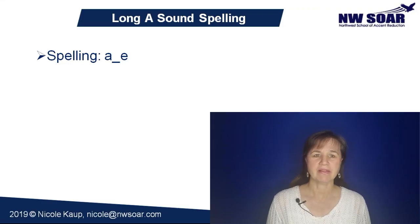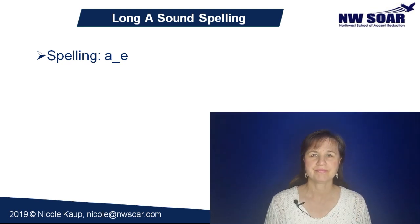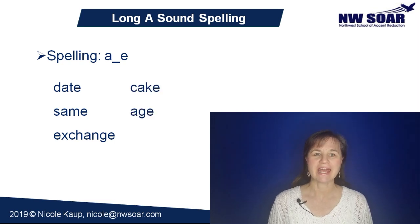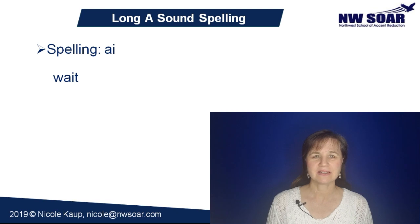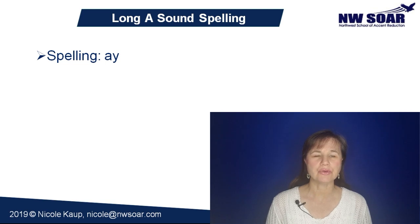Like all English long vowel sounds, there is more than one common spelling for this sound. In fact there are four very common spellings plus a few more occasional spellings. One common spelling is A-E with a consonant between those two letters — that consonant could be a T, an S, a K, or a variety of others. Examples include date, same, exchange, cake, age, and create. Another quite common spelling is AI, in words like weight, rain, explain, available, and trail.